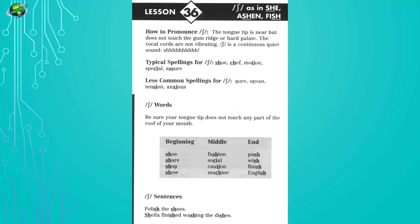Lesson 36: Sh as in she, ashen, fish. Listen and repeat. Shoe, share, shop, show, fashion, social, caution, machine, push, wish, finish.